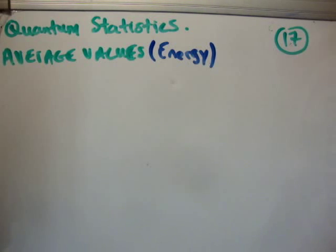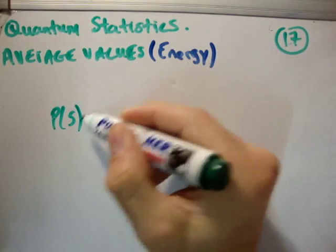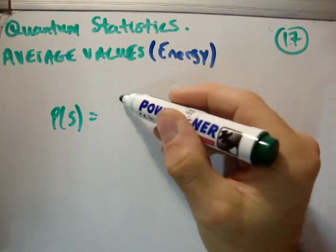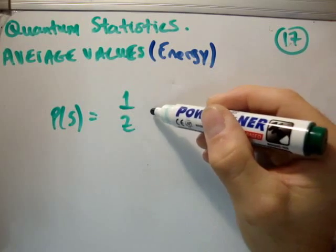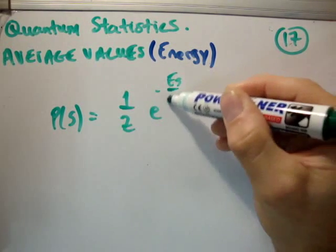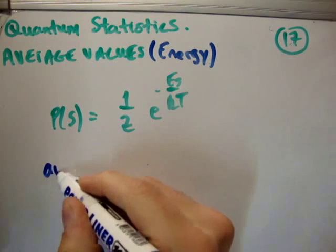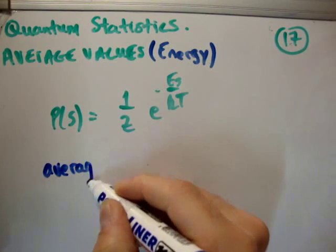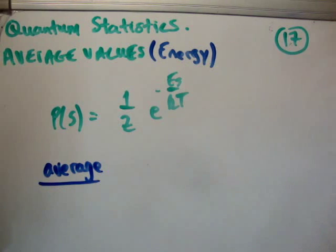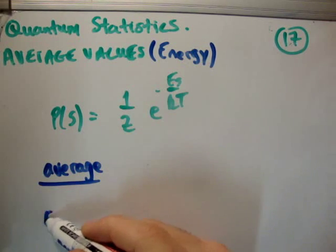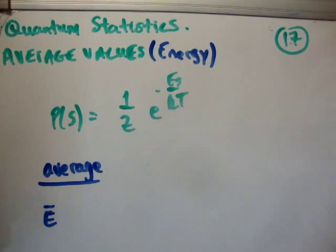So we know that the probability of an event occurring can be written as follows. P sub S is equal to one over Z, the Boltzmann factor, e to the minus E sub S over KT. And I'm not going to bother writing down the Boltzmann factor again. Now if we think about averaging, how do you average something? How do you get the average value of something?